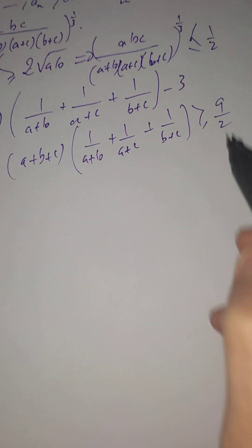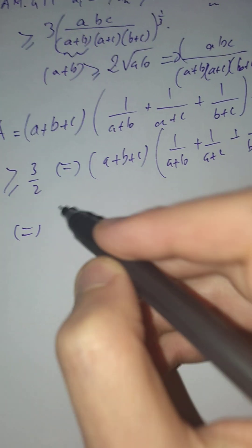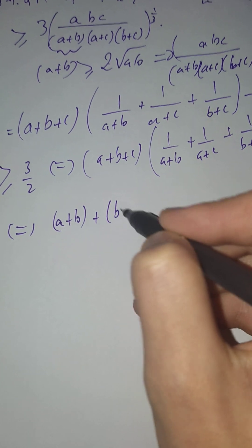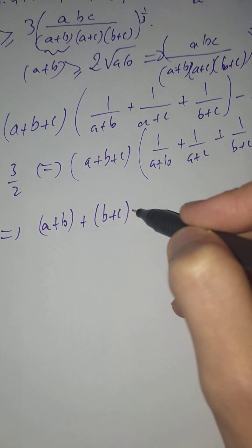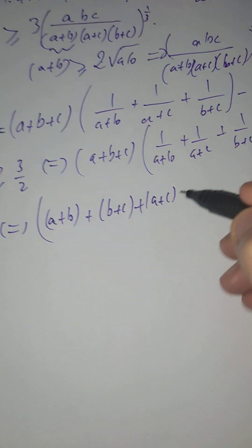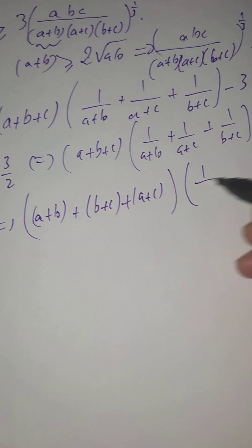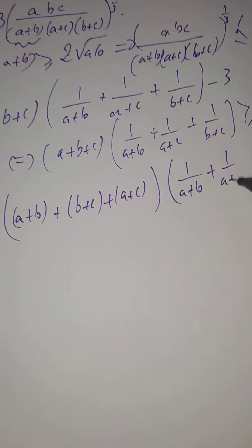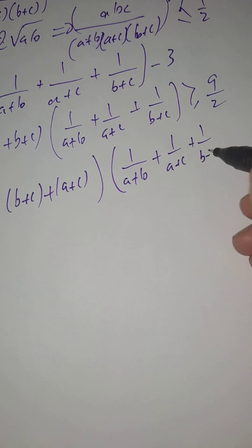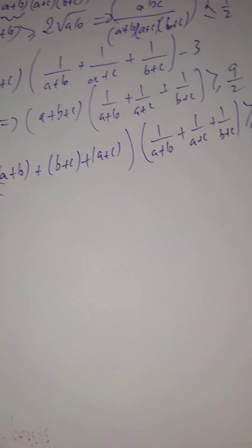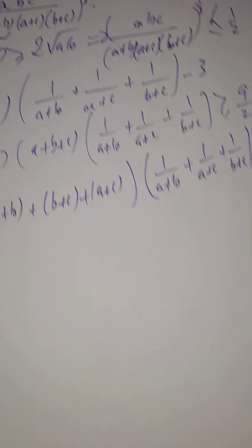We are almost there. So here, we can take this one and put it here, and what we can get, this is equivalent to saying (a plus b) plus (b plus c) plus (a plus c) multiplied by (1 over a plus b plus 1 over a plus c plus 1 over b plus c) is bigger than 9. This is a well-known inequality. We can apply just Cauchy-Schwarz for that.